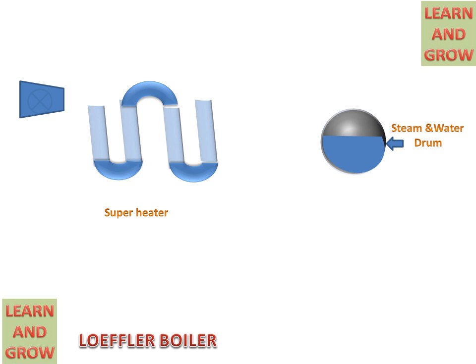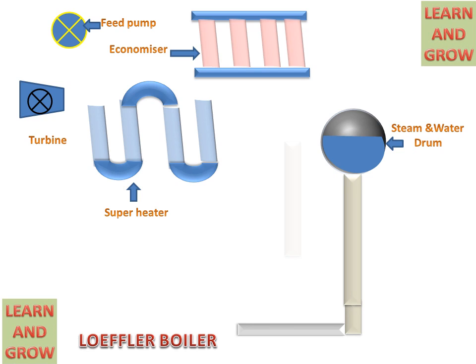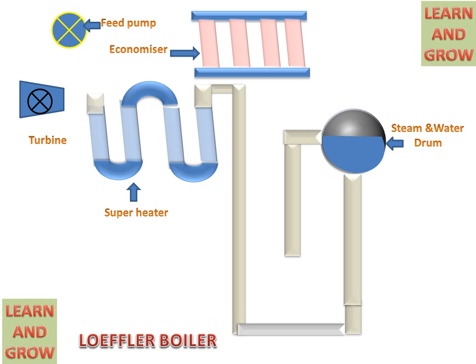These are the superheater tubes, turbine, economizer, and water feed pump, and these all are connected with the help of pipes.